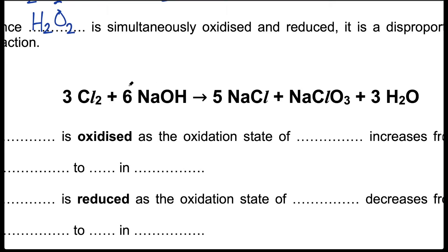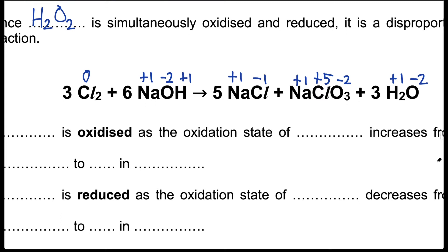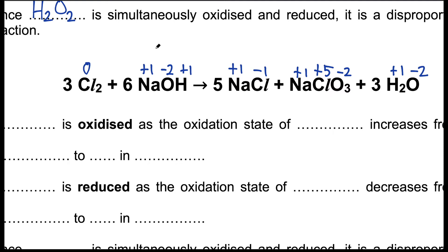As usual, before we start, we always assign oxidation numbers first. If you need help assigning oxidation numbers, do revisit the other video on oxidation states. So here we have different oxidation numbers. If you take a closer look, the oxidation state for sodium, oxygen and hydrogen all do not change. So we focus on what happens to our chlorine. You realize that in this case, the oxidation state decreases and it increases over here.